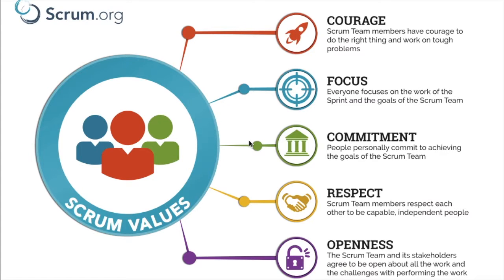In Scrum and agile, the core value is around having a self-motivated team and hiring the right team members. Once you have the right people, they should have the courage to do the right thing and be given the flexibility to implement the right solution and make tough decisions within the project lifecycle. As a team member, you should have your own opinions, thoughts, and problem-solving attitude to provide feedback and help everyone progress collaboratively.